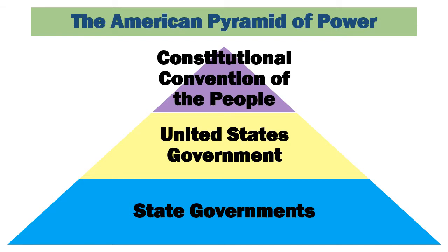As the nation seeks its first Article 5 Convention of the People, be aware of the American pyramid of power. In our system, the state governments form the foundation of the pyramid. The United States government is supreme over them pursuant to the Supremacy Clause of the United States Constitution. But if the U.S. Congress will not act to propose amendments, then over and above the entire system is the constitutional convention of the people, which the state governments are supposed to call.